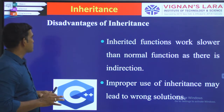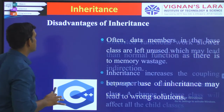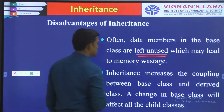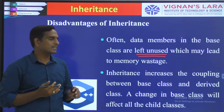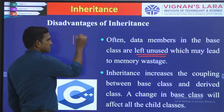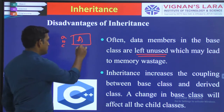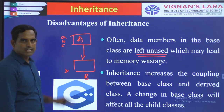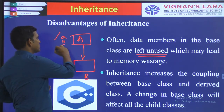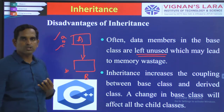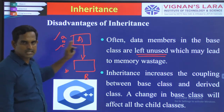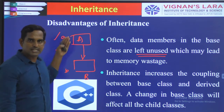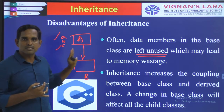Another disadvantage is that data members in the base class are left unused, which may lead to memory wastage. For example, if class A has variables A, B, C and class B uses only variable B and does not use A and C at all — if those are declared as protected variables — then class B gets a copy of all items present in class A. The unused members waste lots of space in your program.